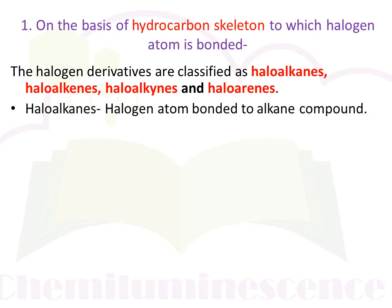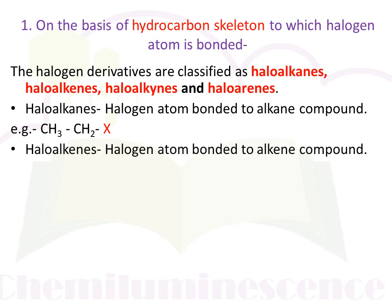Haloalkanes: alkanes are compounds in which all carbon-carbon bonds are single bonds. If a halogen atom is bonded to an alkane, it is called a haloalkane. Here you can see ethyl halide — the carbon-carbon is bonded by a single bond and a halogen atom is bonded to it. Haloalkenes: a compound in which a carbon-carbon double bond is present and a halogen atom is bonded to the alkene carbon is called a haloalkene. Here the carbon-carbon is bonded by a double bond and a halogen atom is attached to the doubly bonded carbon.